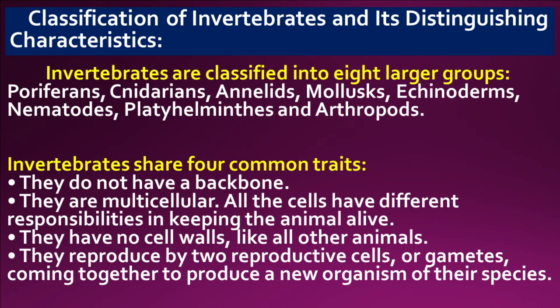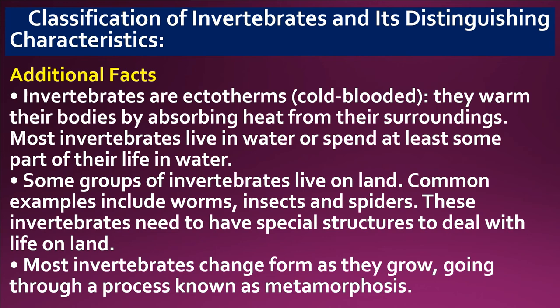Invertebrates share four common traits: they do not have a backbone; they are multicellular; all the cells have different responsibilities in keeping the animal alive; they have no cell walls, like all other animals; and they reproduce by two reproductive cells or gametes coming together to produce a new organism. Additional facts: invertebrates are ectotherms — cold-blooded, warming their bodies by absorbing heat from surroundings. Most invertebrates live in water or spend at least some part of their life in water. Some live on land, such as worms, insects, and spiders, which need special structures to deal with life on land. Most invertebrates change form as they grow, going through a process known as metamorphosis.